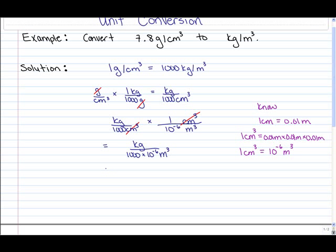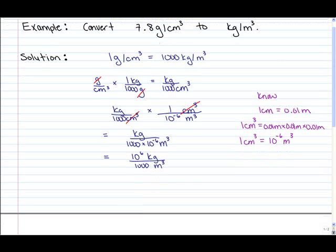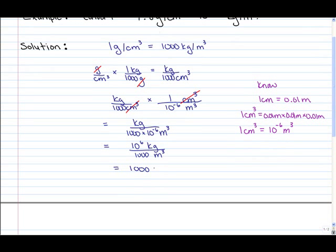Let me rewrite this by bringing the 10 to the negative 6 up to the numerator, where it becomes 10 to the positive 6 kilograms over 1,000 cubic meters. Now, 10 to the power 6 divided by 1,000 reduces to 1,000, so we get 1,000 kilograms per cubic meter. Therefore, 1 gram per cubic centimeter is equivalent to 1,000 kilograms per cubic meter.